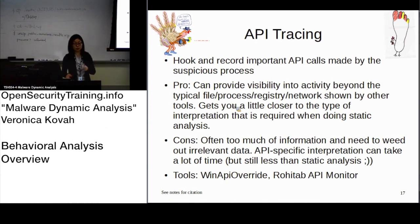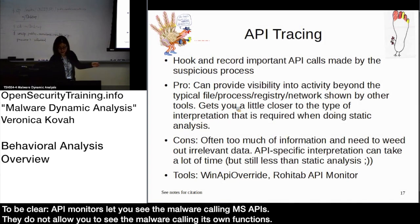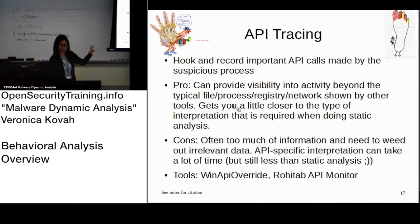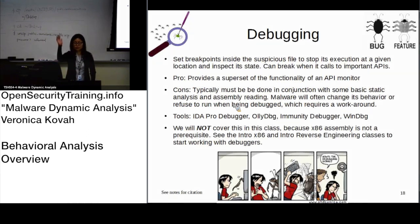API tracing gives much more detailed information than system monitoring. We will use this technique during this class. It is good because you see very detailed information, but the challenge is interpreting the data — you will end up seeing a lot of API calls. For that we are going to use WinAPI Override and another API monitoring tool called Rohitab API Monitor. We will use both tools.